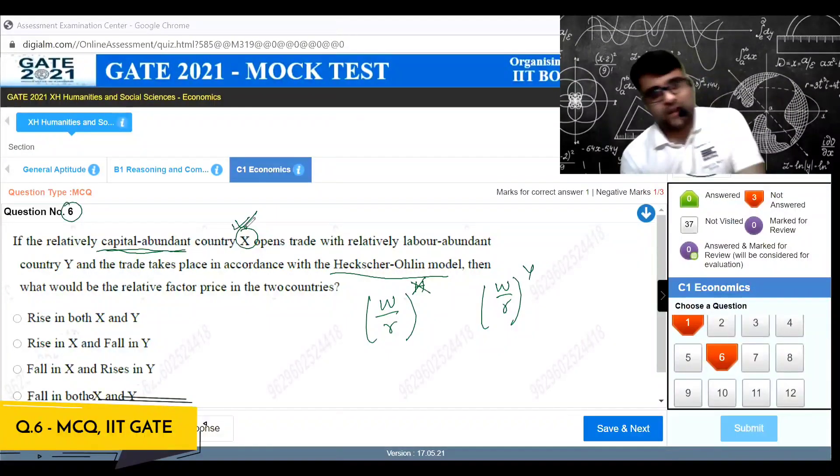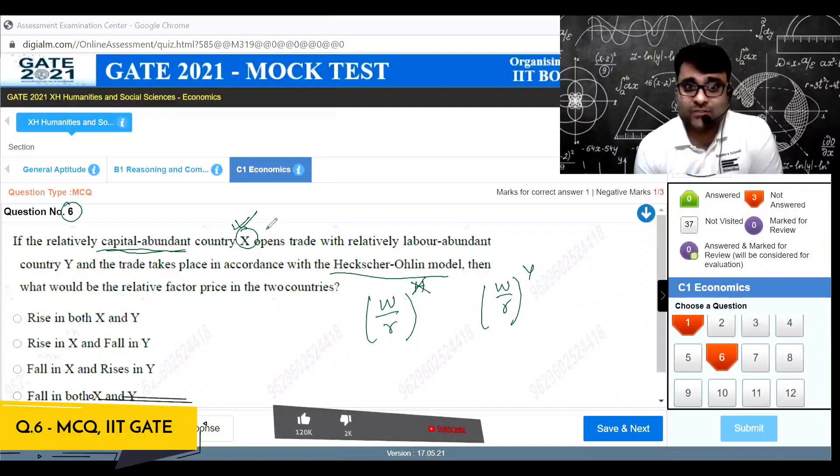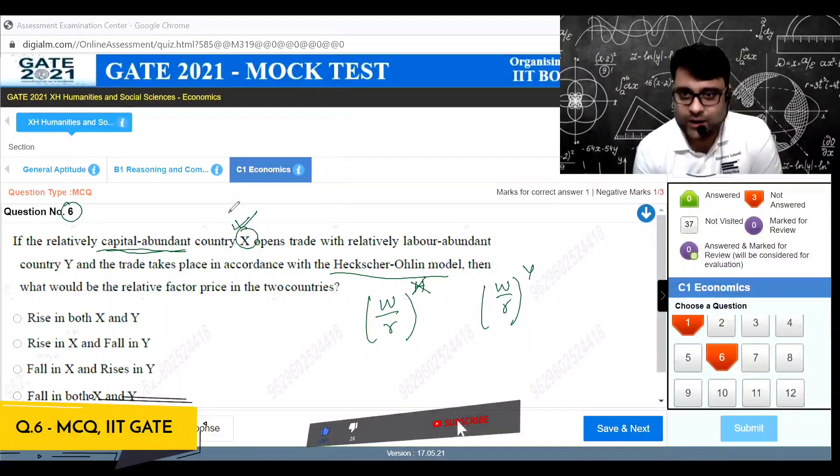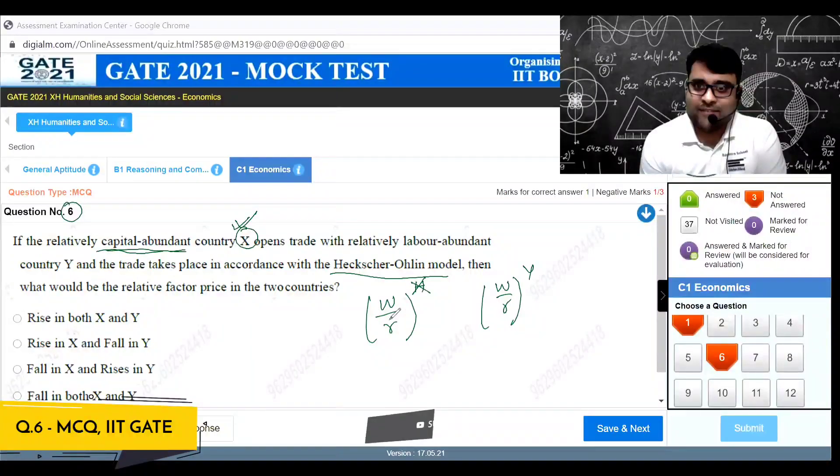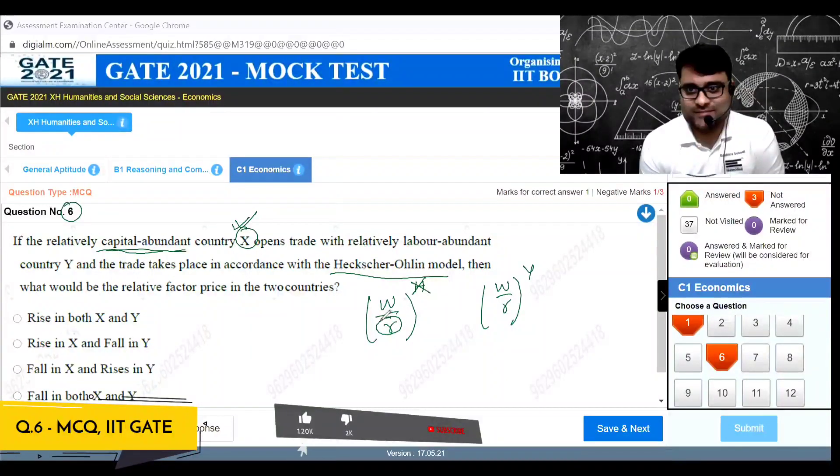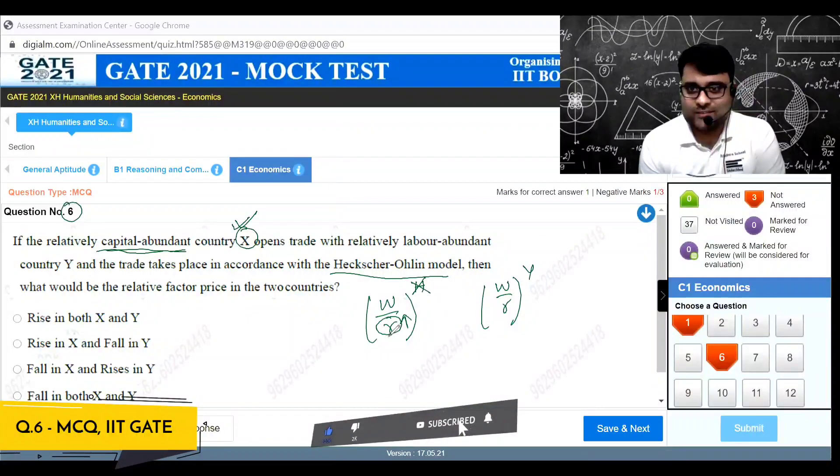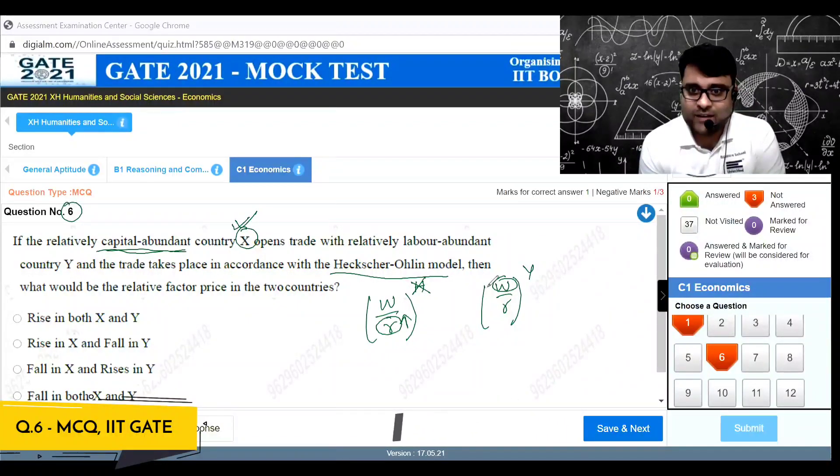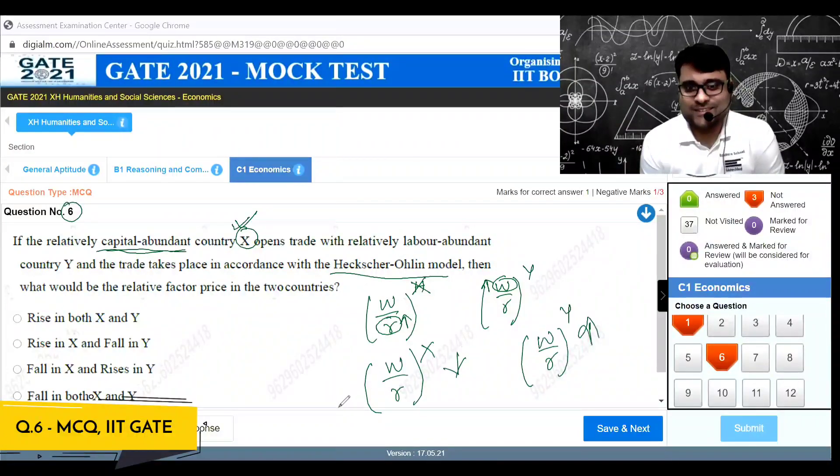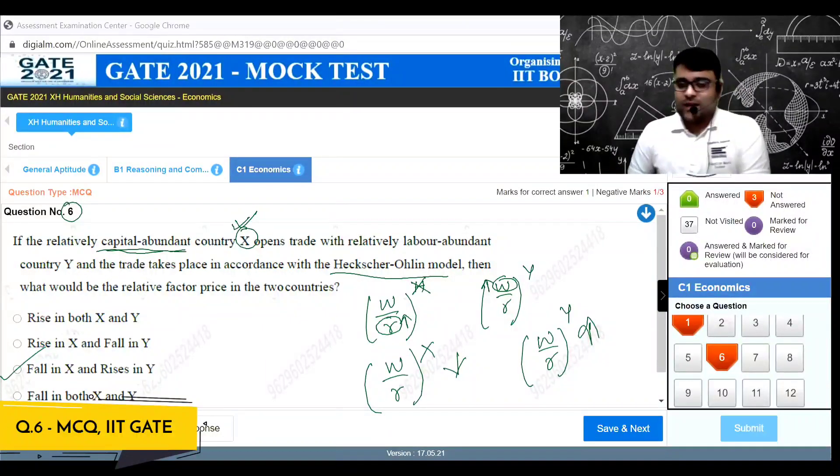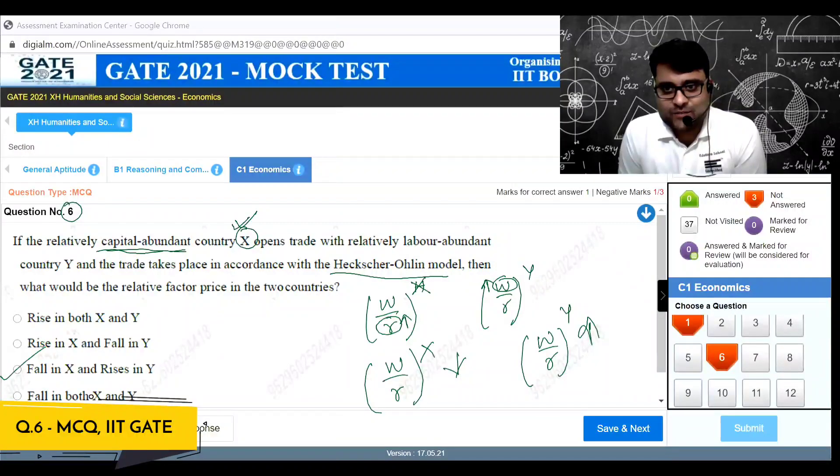As trade opens up, country X will export the capital intensive good and hence we will have an increase in the rental rate. Rental rate will increase for country X and wage rate will increase for country Y. So what will happen is w by r for country X will fall and w by r for country Y will increase. Fall in X and rise in Y.